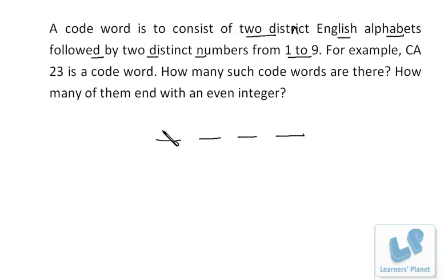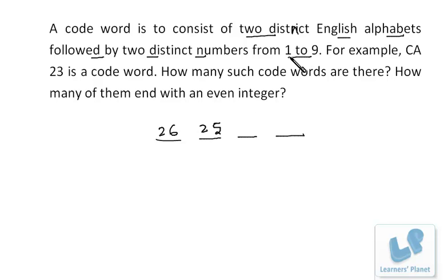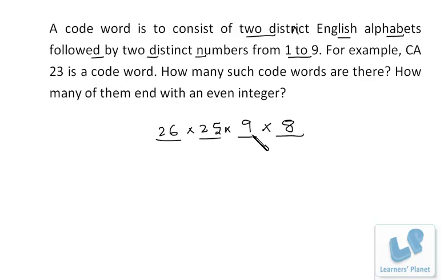We have 26 alphabets. Since the two alphabets must be distinct, for the first place we have 26 choices and for the second place we have 25 choices. For the numbers — available from 1 to 9 — we have 9 choices for the third place. Since numbers must also not be repeated, we have 8 choices for the fourth place. So the answer is 26 × 25 × 9 × 8.